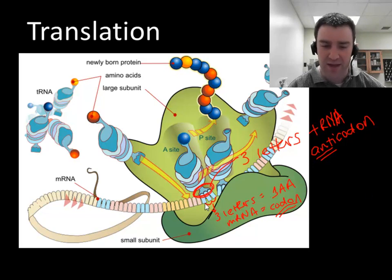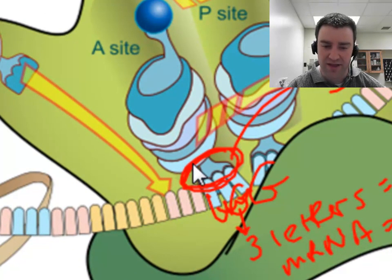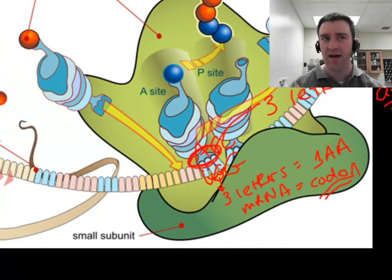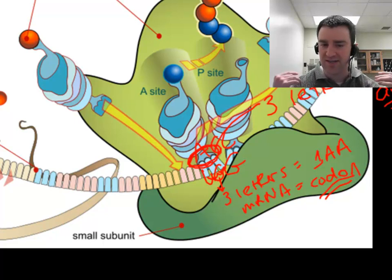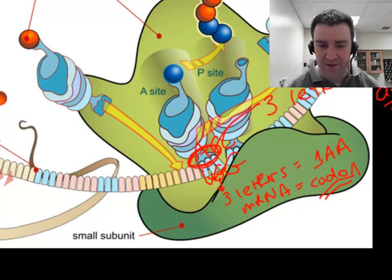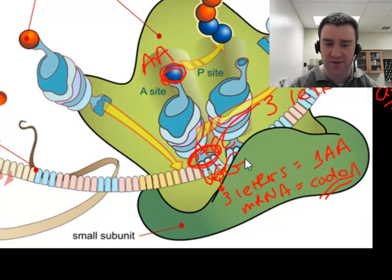For example, maybe the mRNA codon is something like UGG, and then the tRNA would need to carry complementary letters — say ACC. That's how a tRNA knows where to deliver its amino acid. You can think of the mRNA codon as calling for a particular amino acid, and then the tRNA with that particular anticodon can deliver that amino acid to that specific spot.